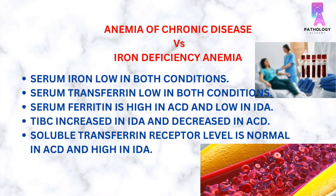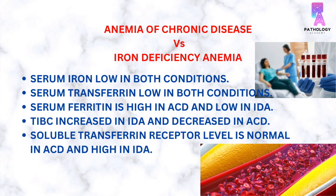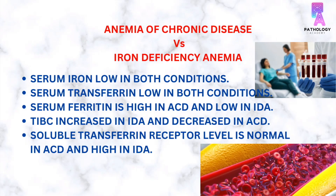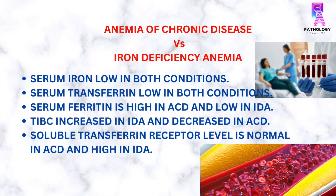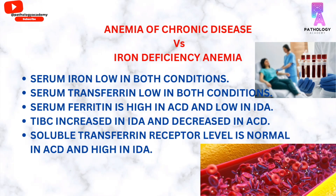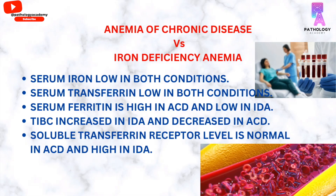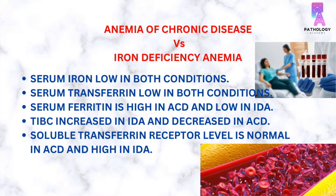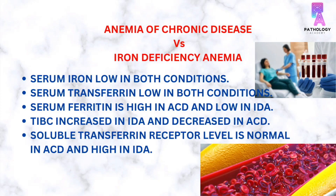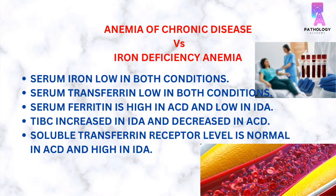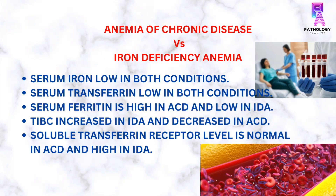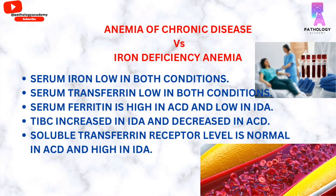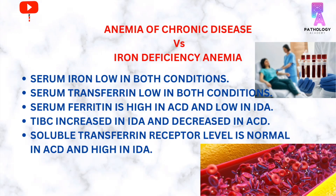The transferrin saturation is low in anemia of chronic disease due to low levels of iron, as the molecules of transferrin occupied by iron will be less. In anemia due to iron deficiency, as a compensatory mechanism against low serum iron, transferrin production is high, causing increased total iron binding capacity. However, in anemia due to chronic disease, the total iron binding capacity is decreased as the body produces less transferrin to bind circulating iron. Soluble transferrin receptor levels are normal in anemia due to chronic disease and increased in anemia due to iron deficiency.